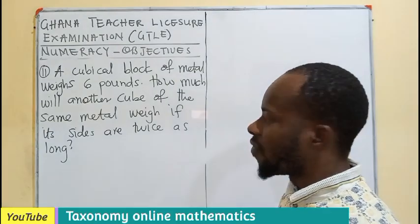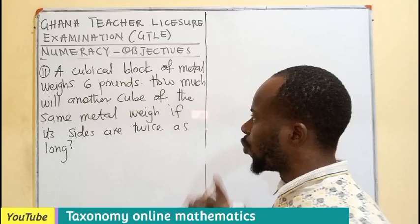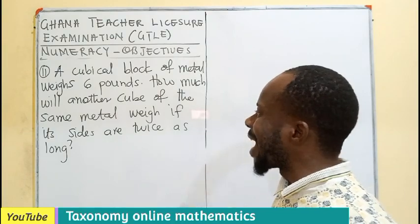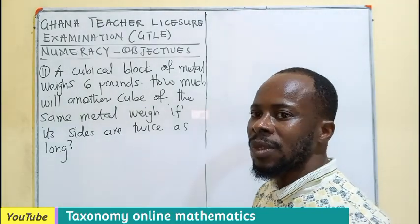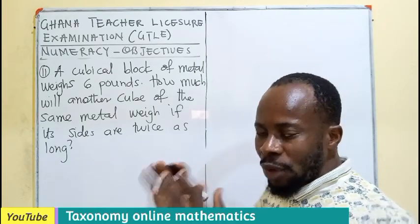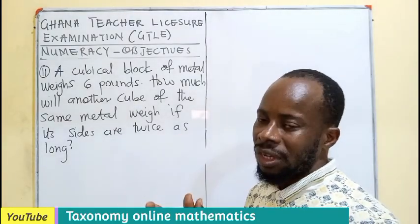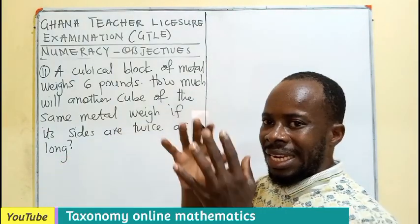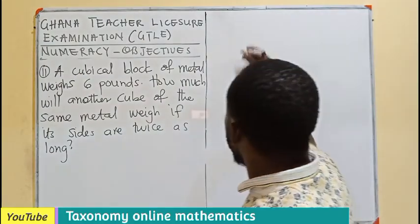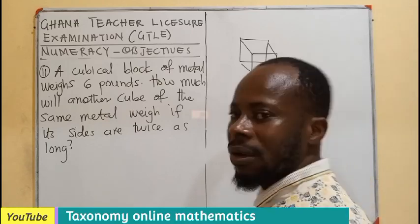Question 11. A cubic block of metal weighs six pounds. How much will another cube of the same metal weigh if each side are twice as long? The same metal means aluminum block is used to make a cube, and it is weighing six pounds. Now, they say aluminum block is used to make another cube. In this time, the length are double. So, we know a cube if we have it.